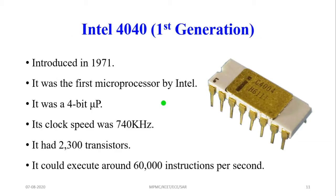The Intel 4004 was the very first processor developed by Intel, introduced in 1971. It was the first microprocessor by Intel, supporting 4-bit data — that's why it is called a 4-bit microprocessor. The clock speed was 740 kilohertz, and it had 2,300 transistors inside the single IC. It could execute 60,000 instructions per second.